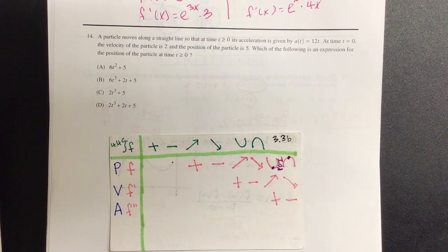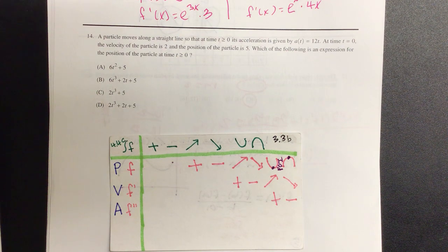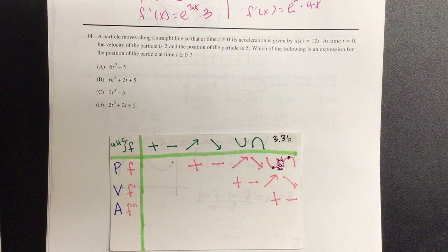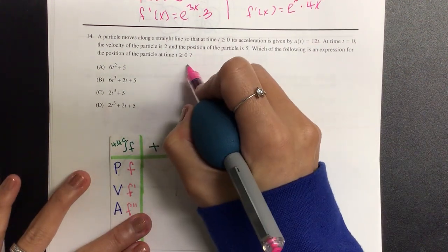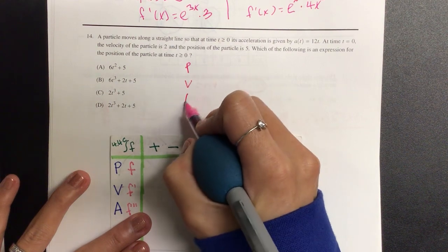So if we're given the acceleration equation and I want the particle, how many times do we have to anti-derive? Twice. So let's write out some information given to us. They gave us the position, velocity, and acceleration.